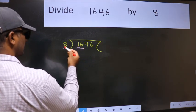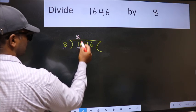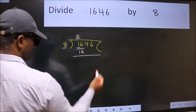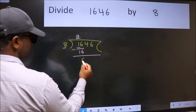When do we get 16 in the 8 table? 8 times 2 is 16. Now, we should subtract. We get 0.